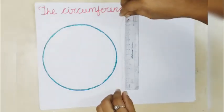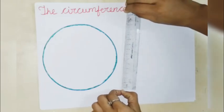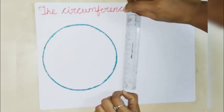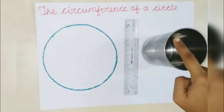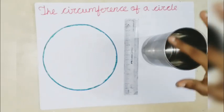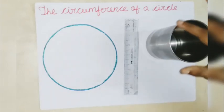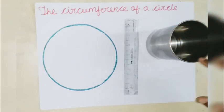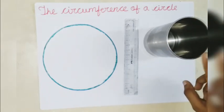This is 15 centimeters. In this way, you can measure the circumference of a circle. You will have to put the thread like this, stretch it, and this is completely 15 centimeters. So we can say that the circumference of this circle is 15 centimeters.